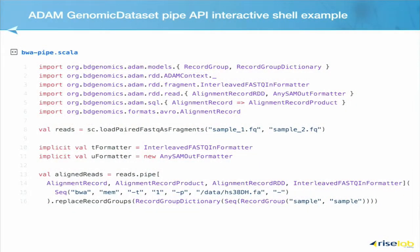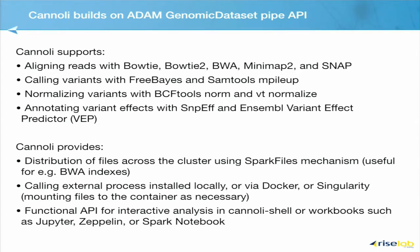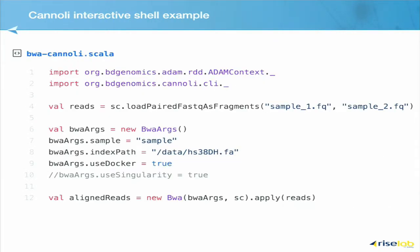In ADAM, if you were to write some Scala code in an interactive fashion to use the Pipe API, it would look something like this. You need to specify your in and out formatters and give the command line — here we're talking about BWA, streaming data out in FASTQ and receiving it back in SAM. But this API is a little bit ugly, so we've written another library called Cannoli. Cannoli wraps a bunch of bioinformatics tools and provides additional features such as running these tools in Docker or Singularity transparently, and handles mounting of shared data to those Docker images. With the Cannoli API, we now have a much simpler API — you load the paired reads, set up some arguments for BWA, and just apply BWA as a function to those reads and you get back your aligned reads.